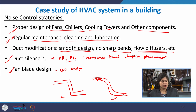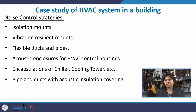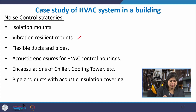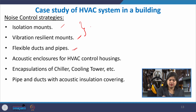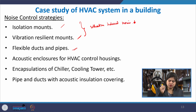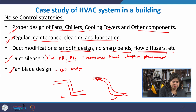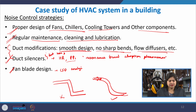Isolation mounts should be used so that all vibrating parts are installed not directly on hard ground or reflecting walls, but through isolation mounts to the ground, ceiling, or other hard surfaces. Vibration-resilient mounts can also be used. Flexible ducts and piping systems can further reduce duct noise and vibration-based noise.